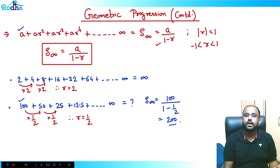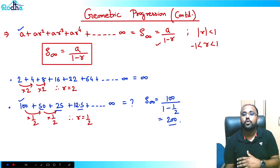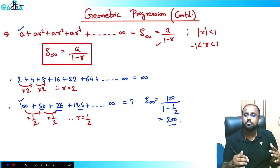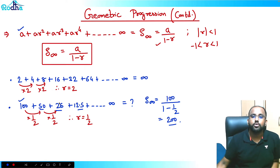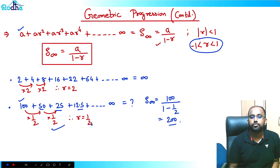This series is decreasing: 50, 25, 12.5, 6.25, 3.125 — at some point it will be close to 0. That's why for such a series we can calculate the sum to infinity, but only when r is between -1 and 1. Here r = 1/2, which is in that range, so we can apply this formula.